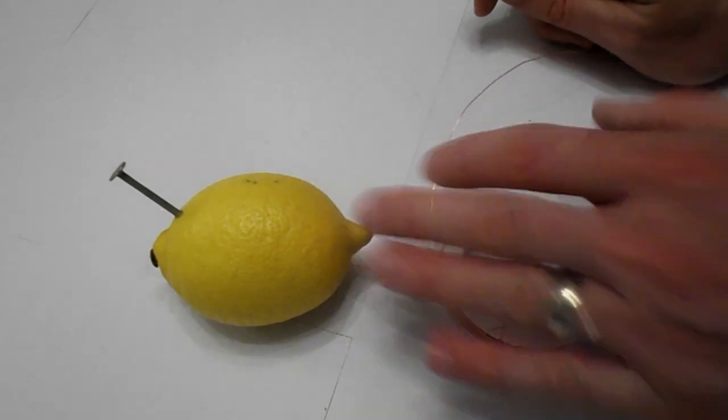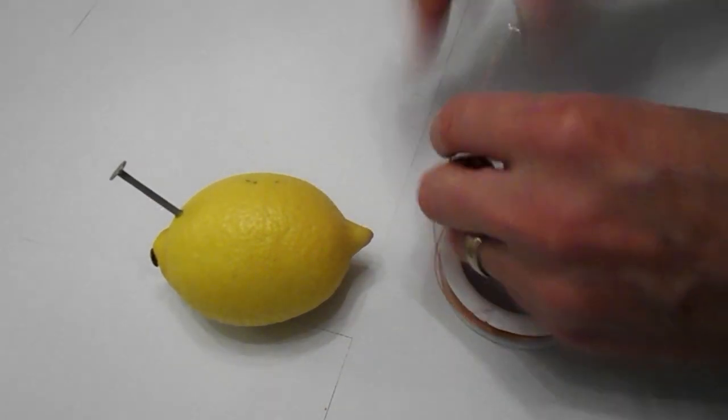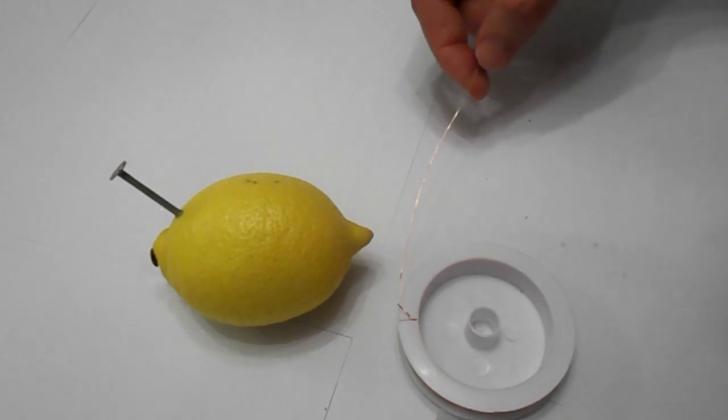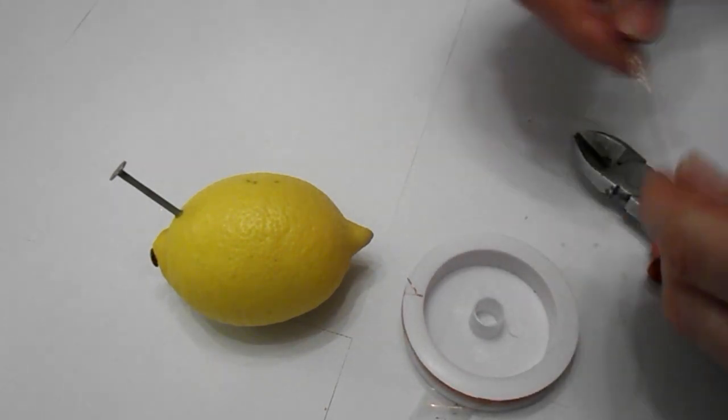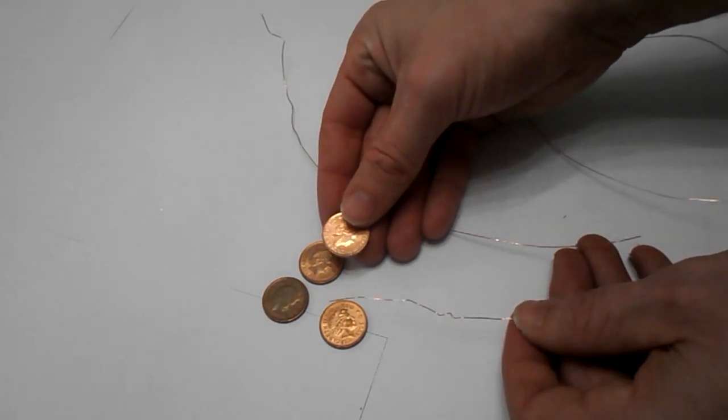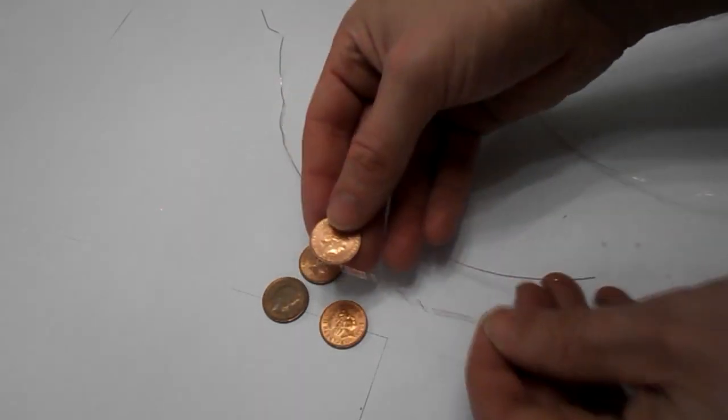Next we're going to have to stick some copper wiring on the other side. So let's cut some lengths. What I like to do to get a better connection is wrap the wire around some copper pennies.